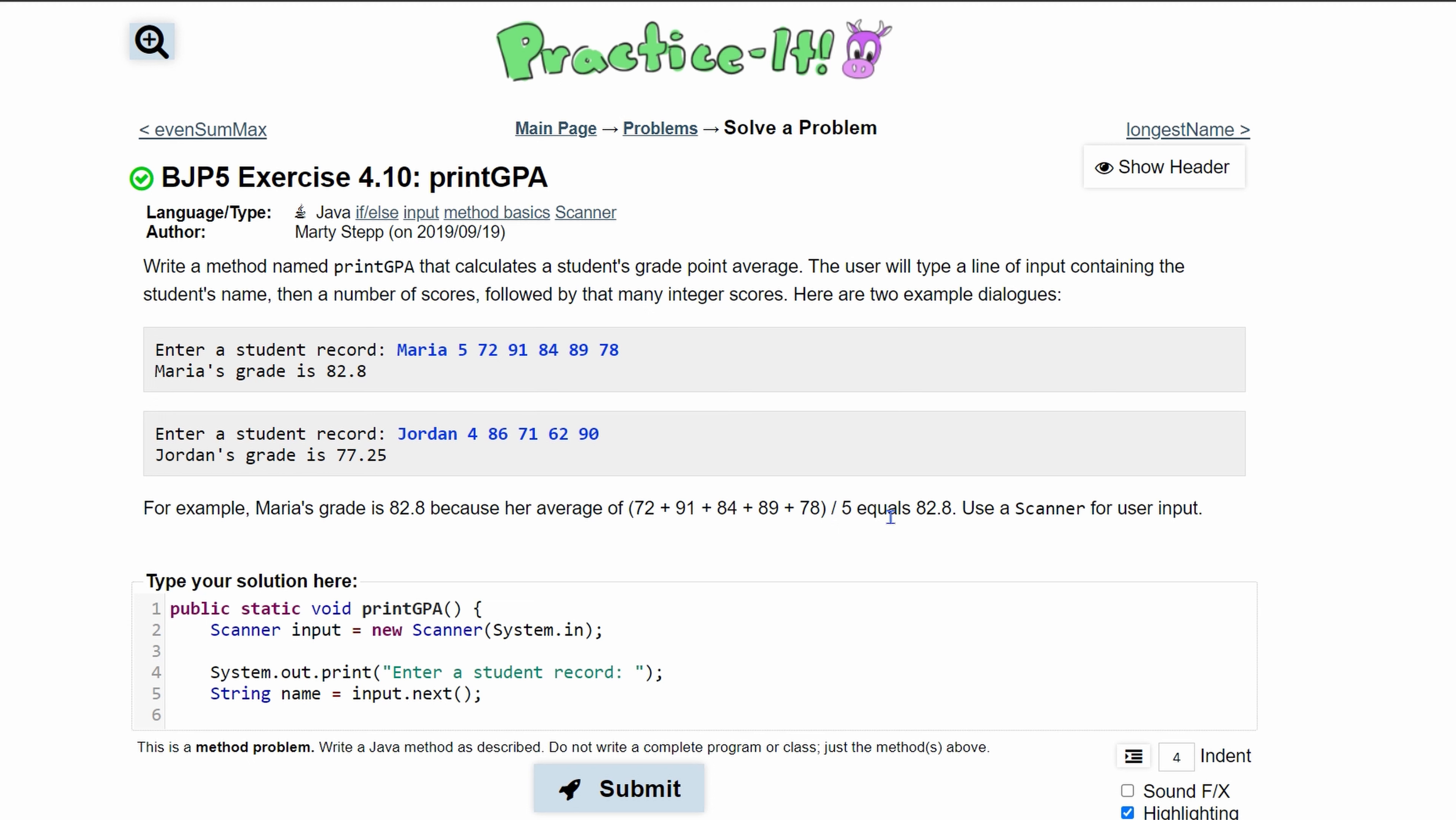When dividing things out like this, we need a double because it's specifically asking us for a double. So instead of making it an integer, we're going to make it a double. We'll call it count, or we can just call it scores because it's the number of scores.